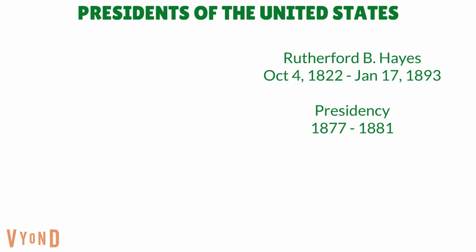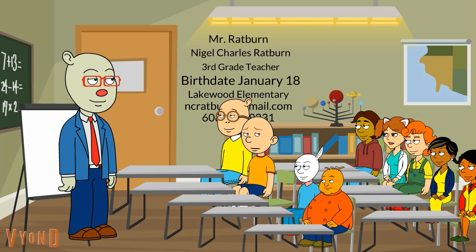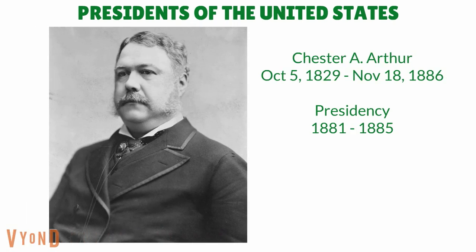The twentieth president is James A. Garfield. James A. Garfield was our twentieth president of the United States. He was born on the 19th of November 1831. He was a president only in 1881. Why was he president only in 1881? On the 2nd of July 1881, Garfield was assassinated by Charles J. Guiteau. Two months later, on the 19th of September 1881, he died. He was our fourth president to die in office and the second to be assassinated. Chester A. Arthur was our twenty-first president of the United States. He was born on the 5th of October 1829. He was a president from 1881 to 1885. He succeeded from vice president to president after Garfield's assassination. He retired in 1885 and later died on the 18th of November 1886.